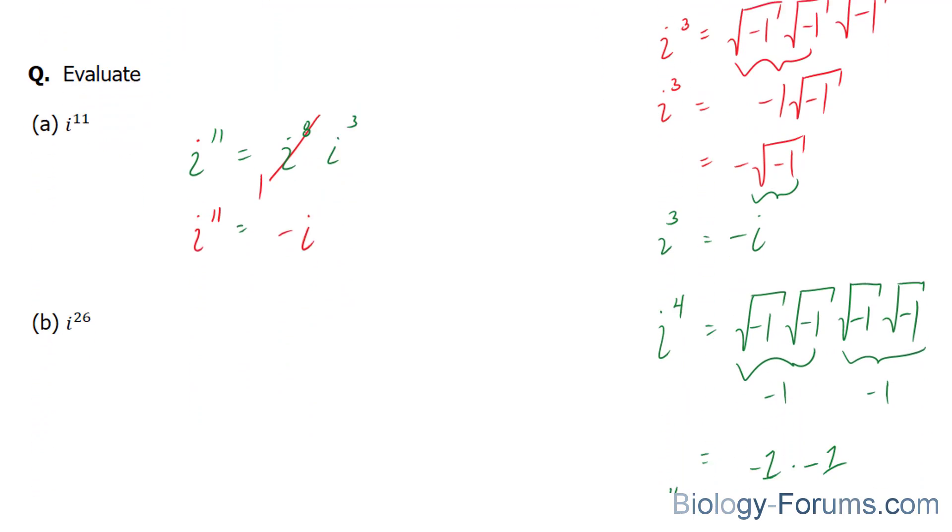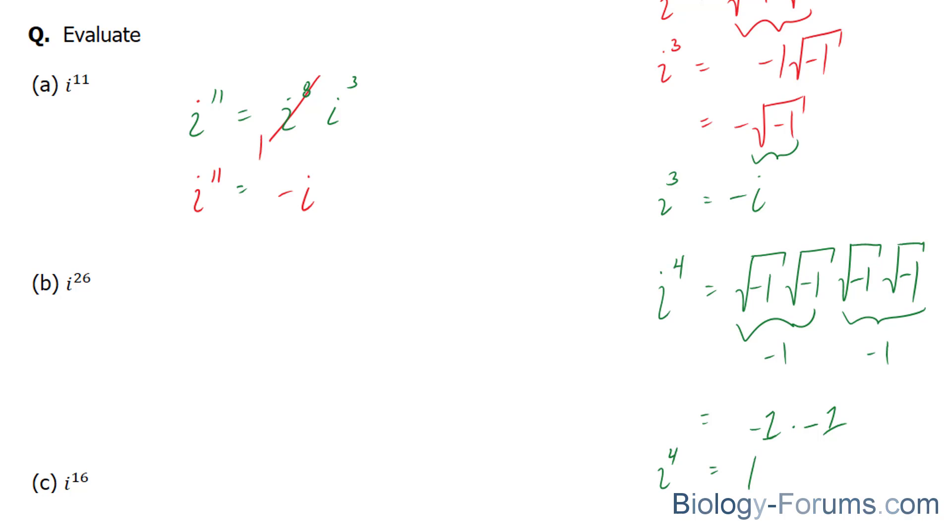Let's move on. Here we have i to the power of 26. Now, 26 is not a multiple of 4, so we can't just reduce it to 1 right away. But what we can do is we can break down i into 24 and i into 2. 24 is a multiple of 4.